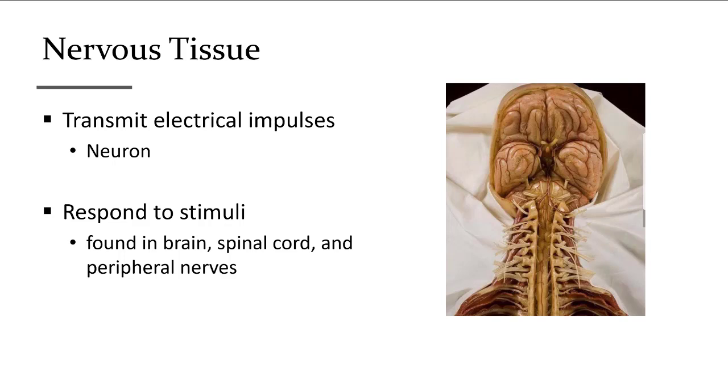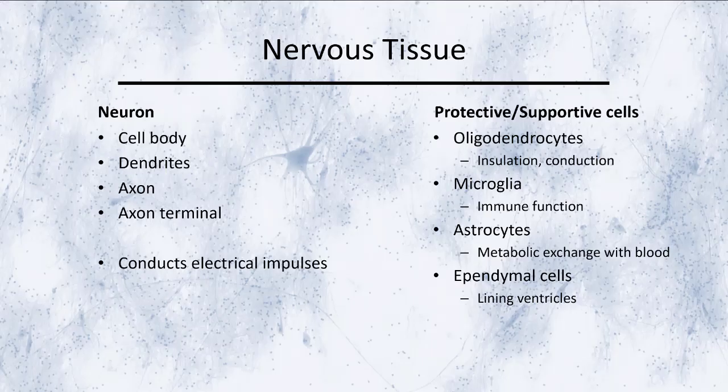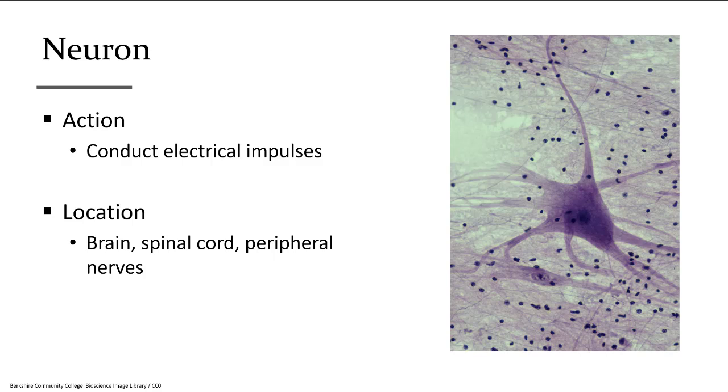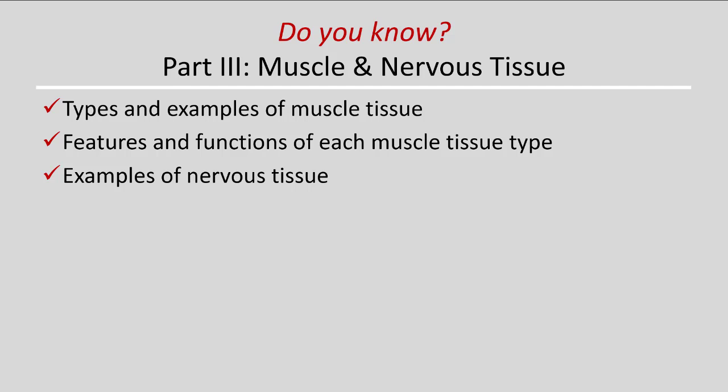Nervous tissue can transmit electrical impulses, responds to stimuli, is electrically active, and is found in the brain, spinal cord, and peripheral nerves. A single neuron has various body parts — we'll cover the details in another chapter on neurophysiology — but a neuron's job is to conduct electrical impulses. You should know its location and what it looks like. You should know the types and examples of muscle tissue, be able to identify them on a histology slide, know their features and functions — whether they have many nuclei or one, whether voluntary or involuntary, and whether striated or not — and know what nervous tissue is and where it can be found.